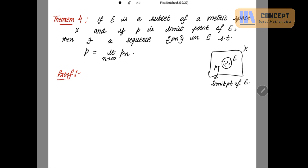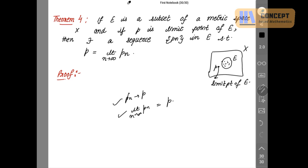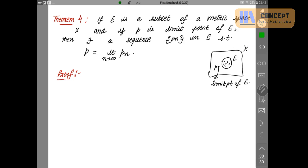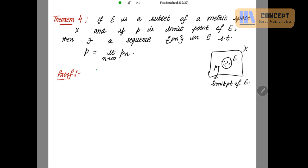This is also the definition of convergence — whenever pn converges to p we can write pn → p, or equivalently the limit as n tends to infinity of pn equals p; both express the same definition of convergence. Let's start the proof. We are given that E is a subset of a metric space X and P is a limit point of E. Let epsilon positive be given.